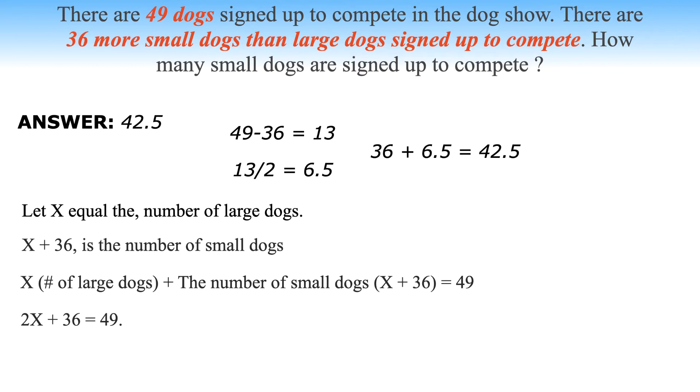That's the same as seeing 2X plus 36 which is equal to 49. 2X is because, as per the question, there are 36 more small dogs than large dogs. The base for both large and small dogs is X. After substituting the values, X equals 13 over 2, which is equal to 6.5. So there are 6.5 large dogs and 42.5 small dogs.